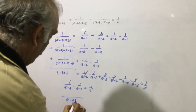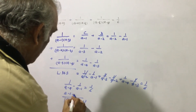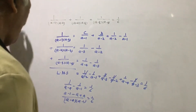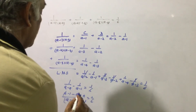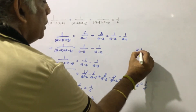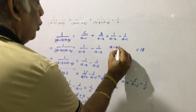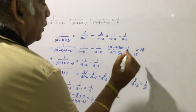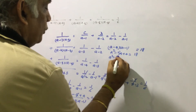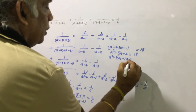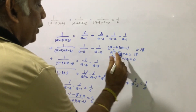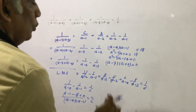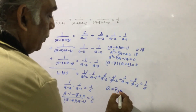Now this becomes: (a minus 1) minus (a minus 4) all over (a minus 4)(a minus 1) equal to 1 by 6. The numerator simplifies to 4 minus 1 equals 3, giving 3 over (a minus 4)(a minus 1) equal to 1 by 6, so (a minus 4)(a minus 1) equals 18. Expanding: a squared minus 5a plus 4 equal to 18, which gives a squared minus 5a minus 14 equal to 0. Factorizing: (a minus 7)(a plus 2) equal to 0, so a equal to 7 and a equal to minus 2.